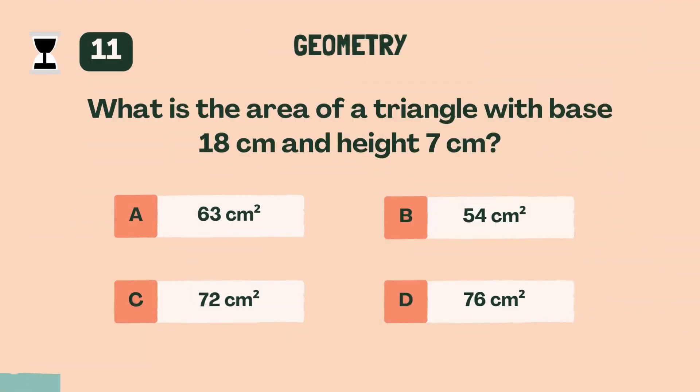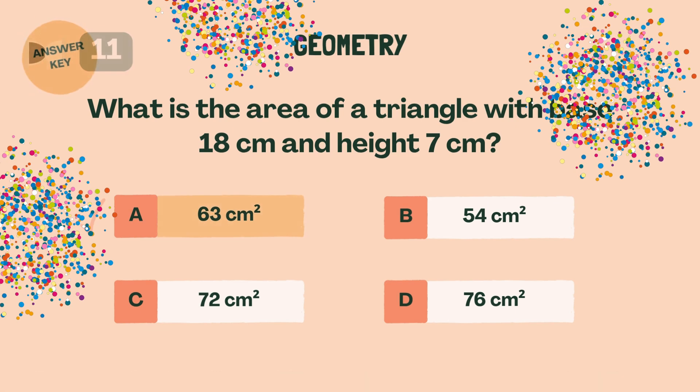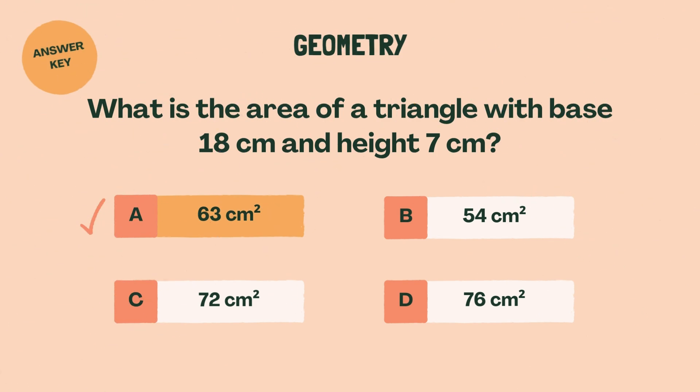What is the area of a triangle with base 18 centimeters and height 7 centimeters? A, 63 square centimeters.